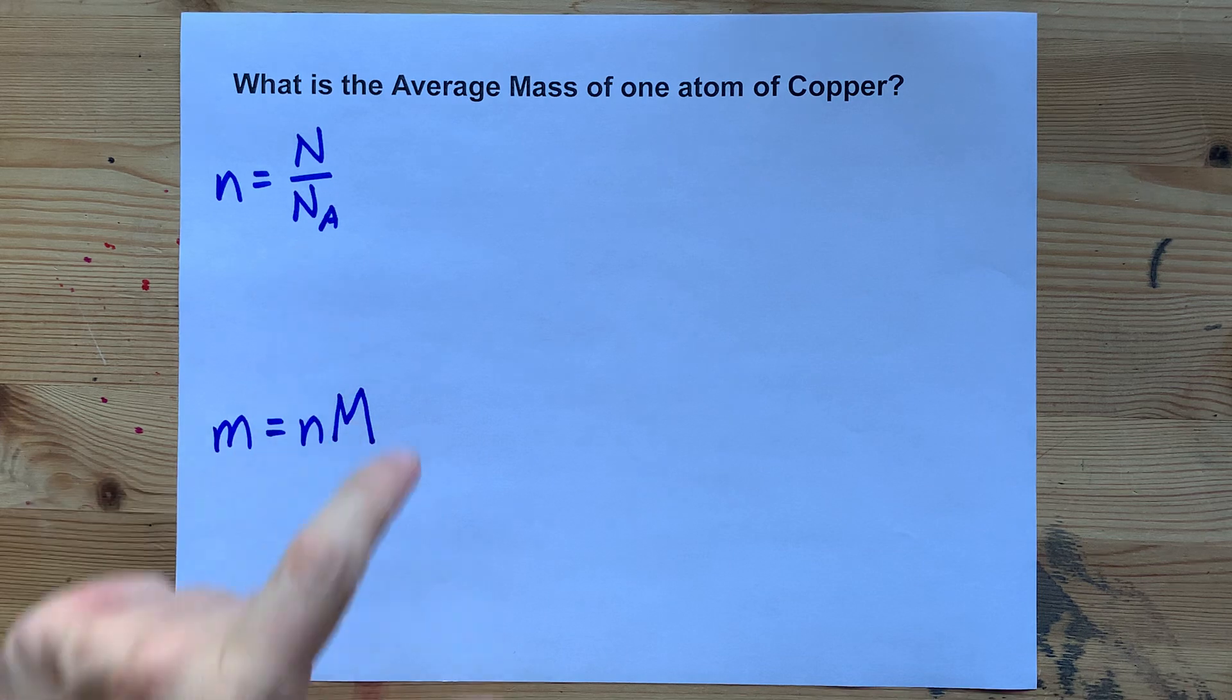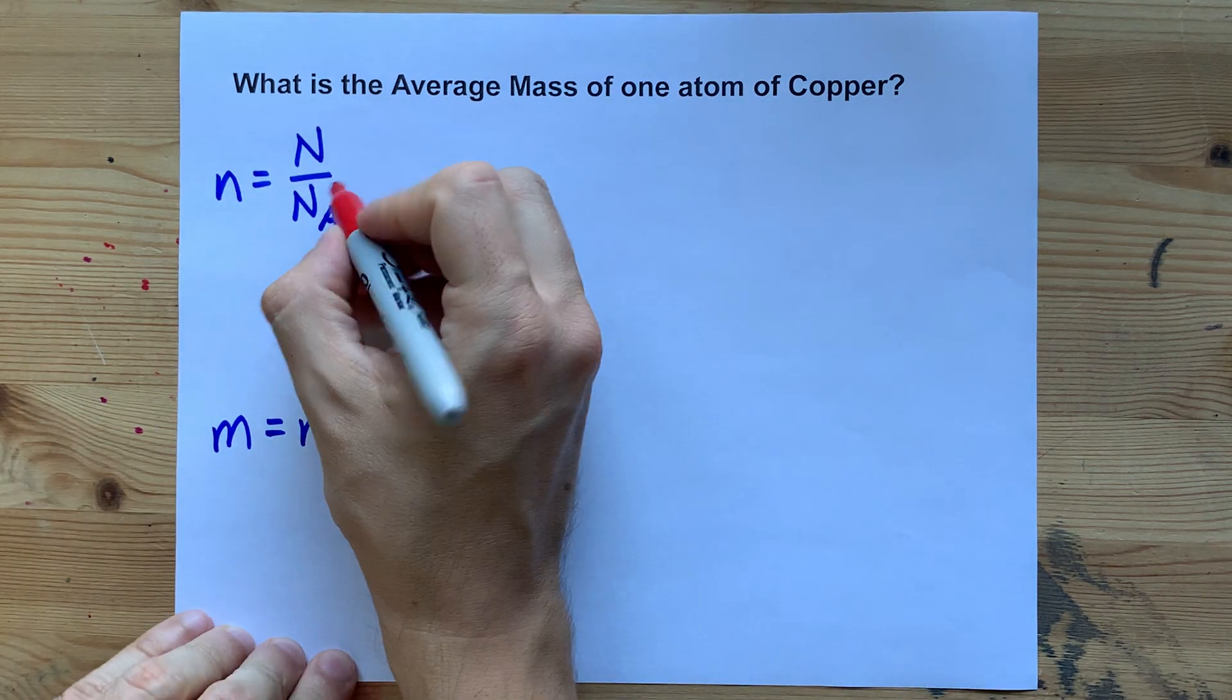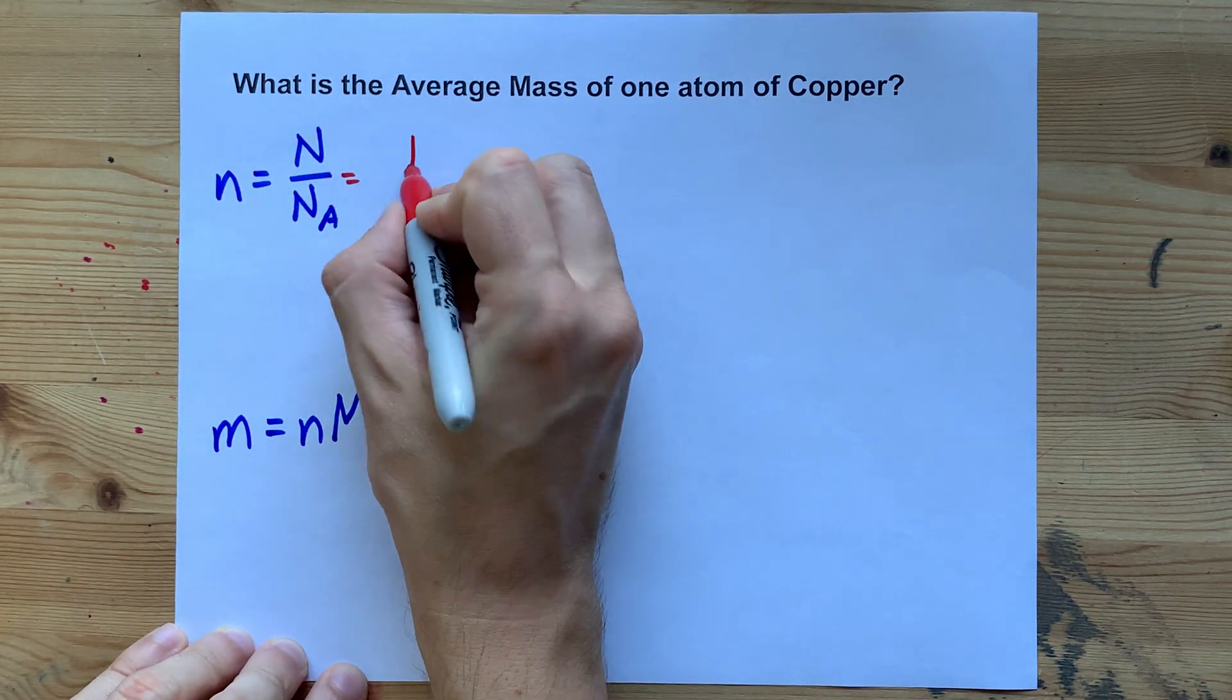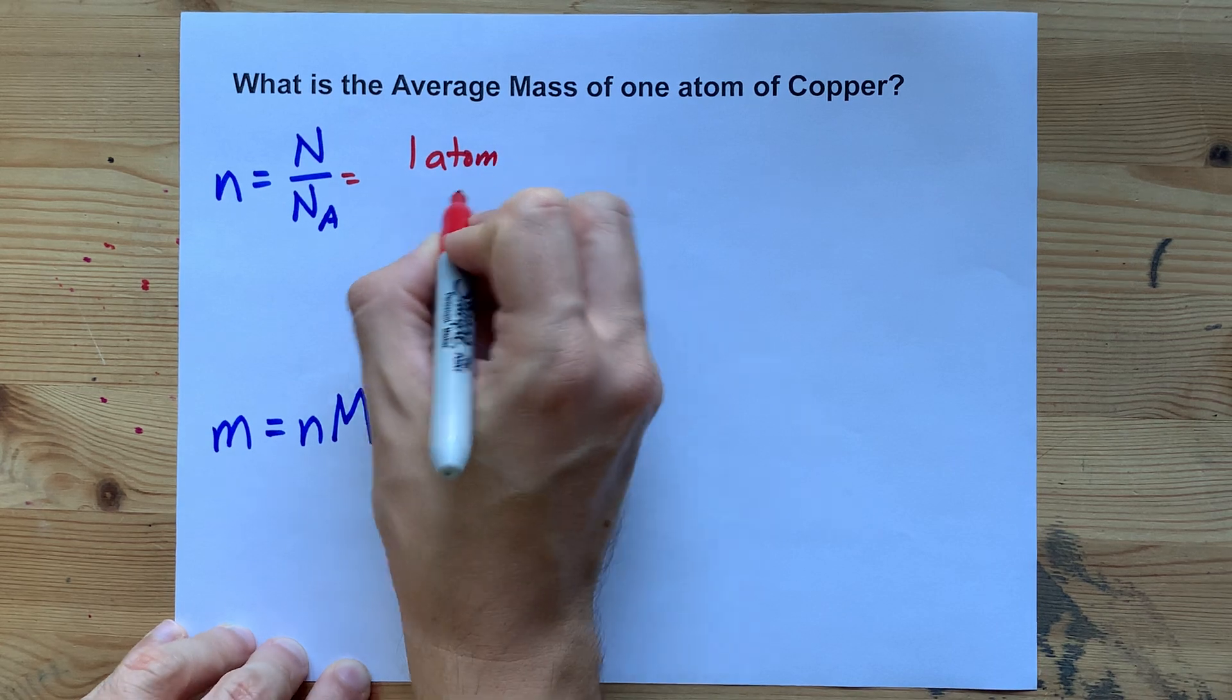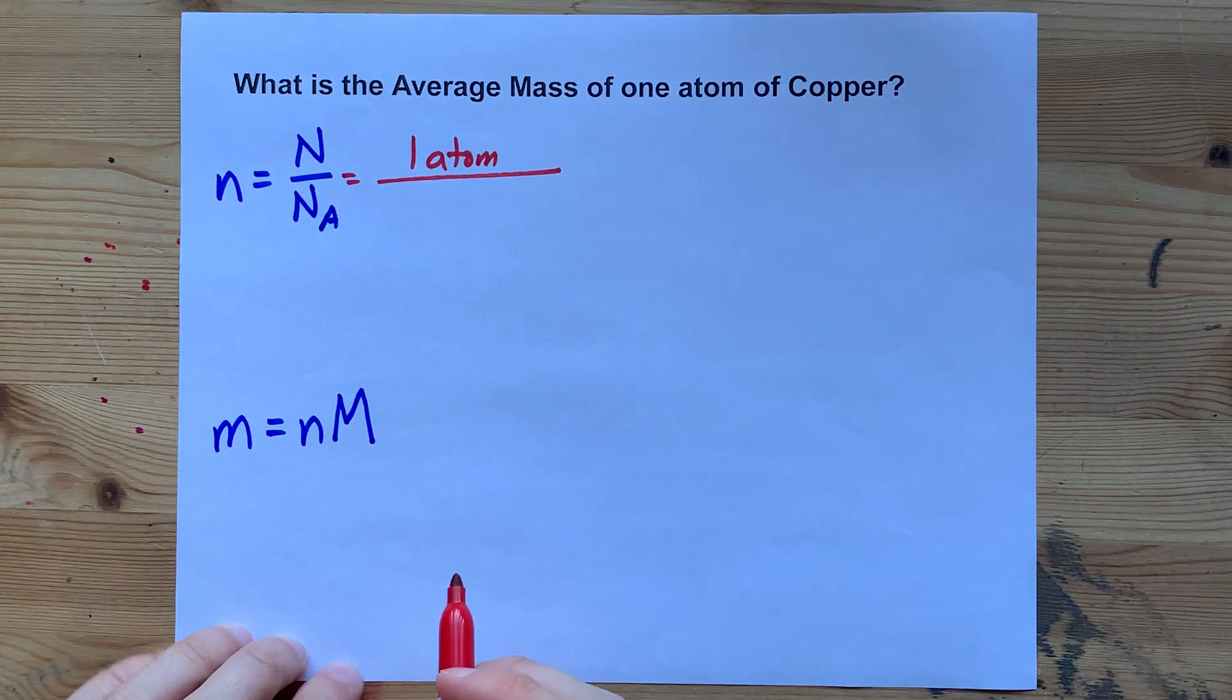Now, let's plug in the actual numbers here. The number of particles that you're starting with is one single atom of copper. That's your capital N for number of particles.